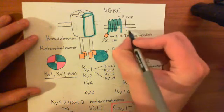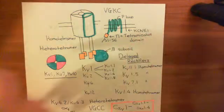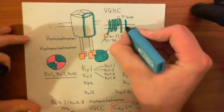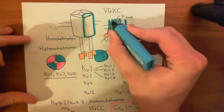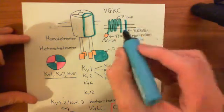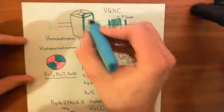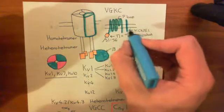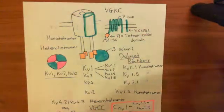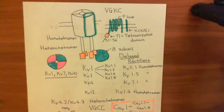This additional protein is a single membrane-spanning protein — it spans the membrane once — and it is known as KCNE1. You can take this KCNE1 protein and associate it with just one alpha subunit. So you take an alpha subunit, take a KCNE1 subunit, bind them together, and that makes one quarter of the channel. Then you take four of those alpha subunits each associated with KCNE1, and they tetramerize together to make the KV7.1 homo tetramer.